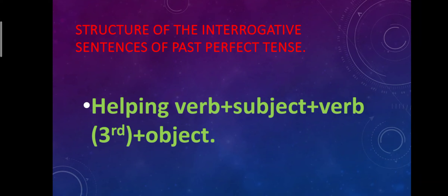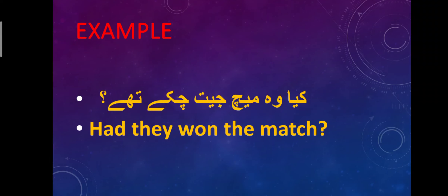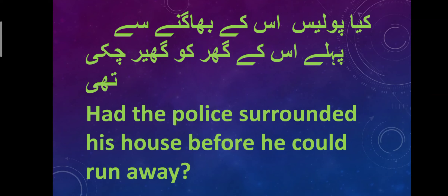Now the structure of interrogative sentences of past perfect tense: Helping verb, subject, third form of verb, then object. The interrogative is very easy — the helping verb comes first, then subject, then third form, then object. For example: 'Kya wo match jeet chuke the?' — Had they won the match? Helping verb, subject, third form, then object. 'Kya police uske bhaagne se pehle uske ghar ko gher chuki thi?' — Had the police surrounded his house before he could run away? Before he could run away is added as 'before he could run away'.